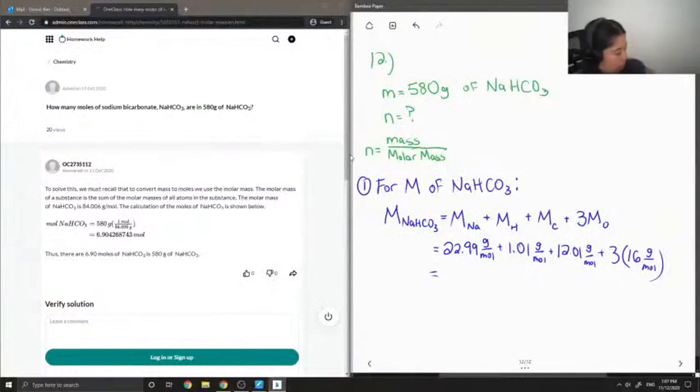So if I were to add up all these different values I would get a total molar mass of 84.01 grams per mole.